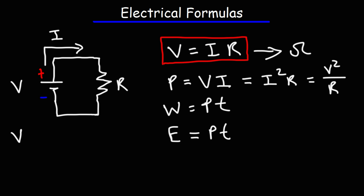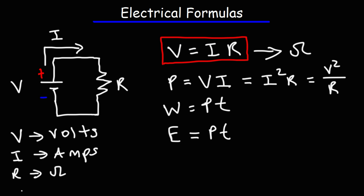Voltage is measured in volts, current is measured in amps, resistance is measured in ohms, but power is measured in watts. Electrical power is the rate at which electrical energy is being transferred, so power is energy divided by time. It tells you how fast energy is being transferred to a device. One horsepower is equal to 746 watts, and one watt is one joule per second.